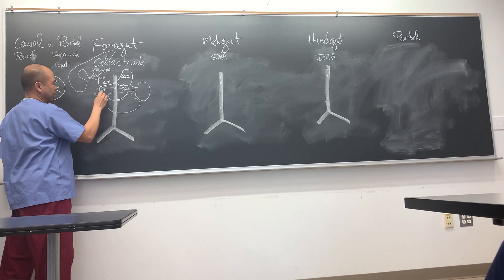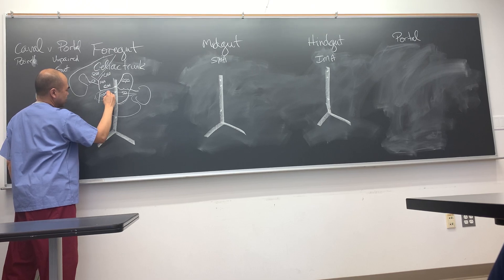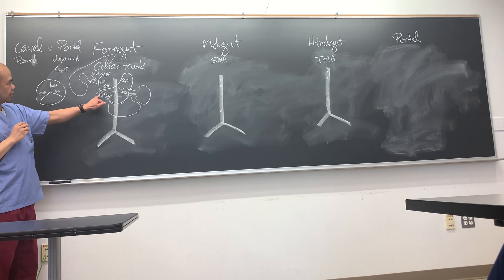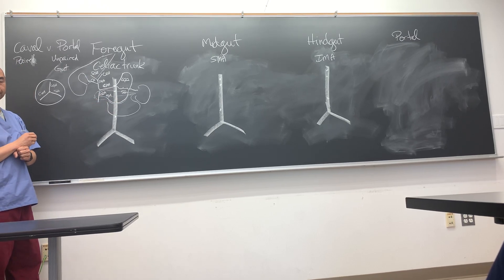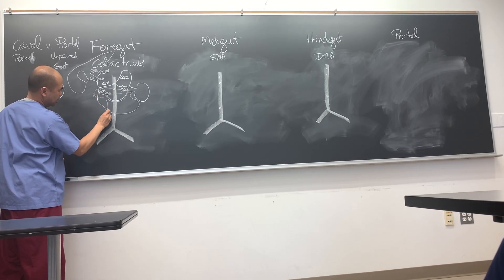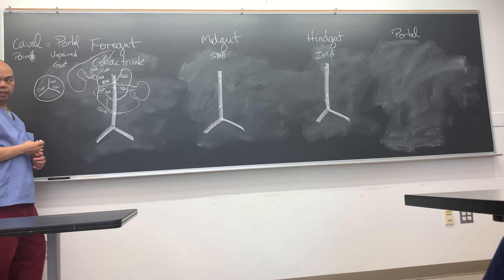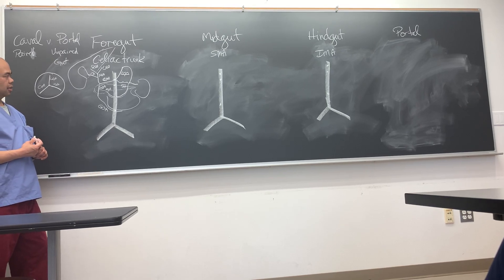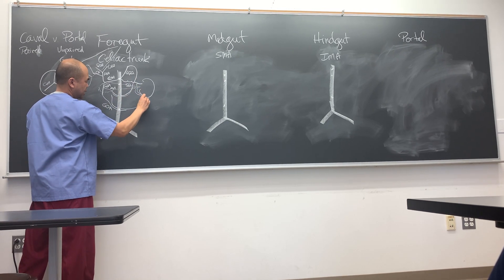Off the gastroduodenal artery, we get a branch that goes to the lesser curve - the right gastric artery. The right gastric artery meets the left gastric artery at the lesser curve of the stomach. Also off the gastroduodenal, this artery continues as the gastro-omental (gastro-epiploic) artery on the greater curve of the stomach. The left gastro-omental artery comes off the splenic.